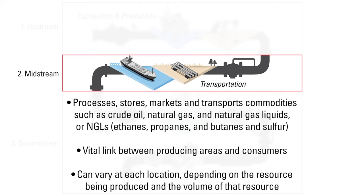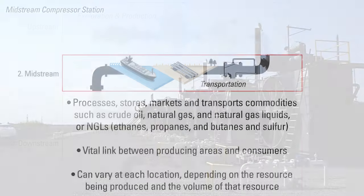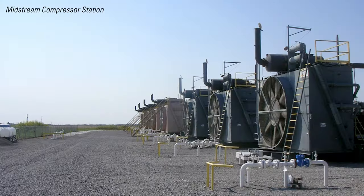The midstream landscape can vary from one location to the next. It all depends on the resources being produced and the volume of that resource. This example of a compressor station shows one way that natural gas is transported from the production fields to market.